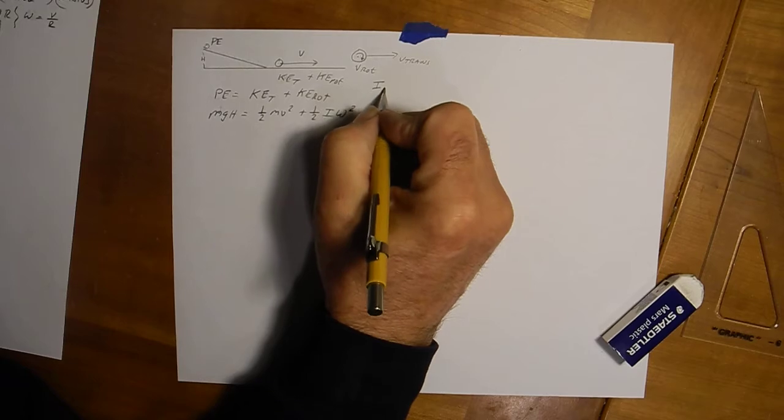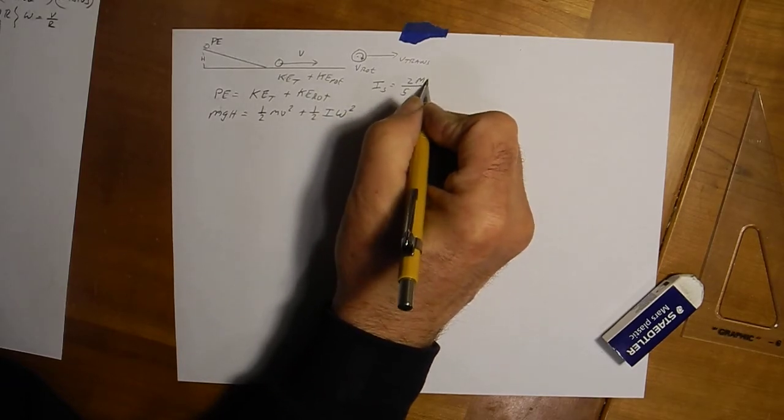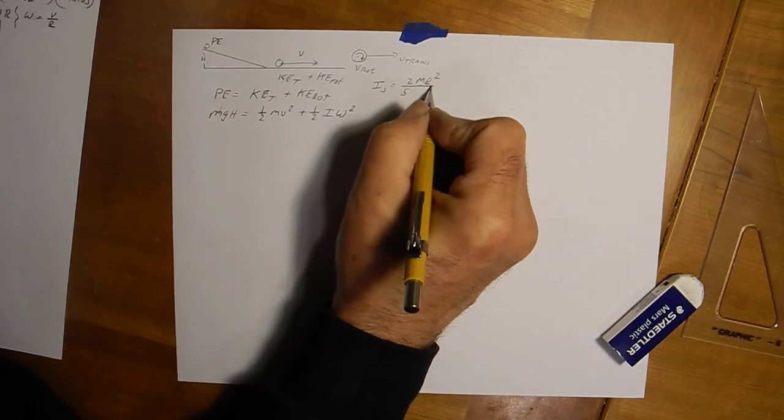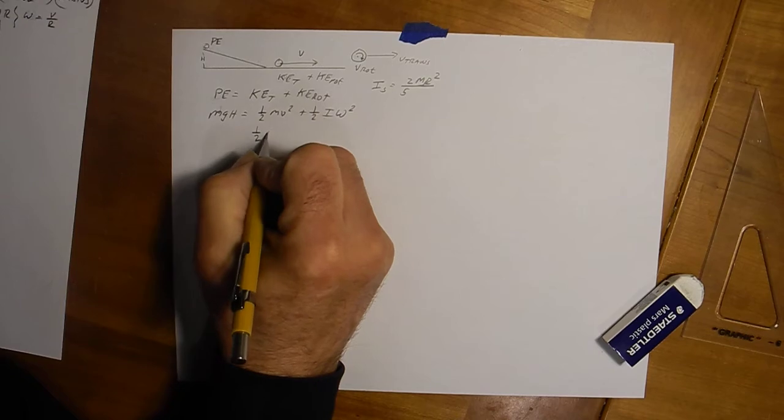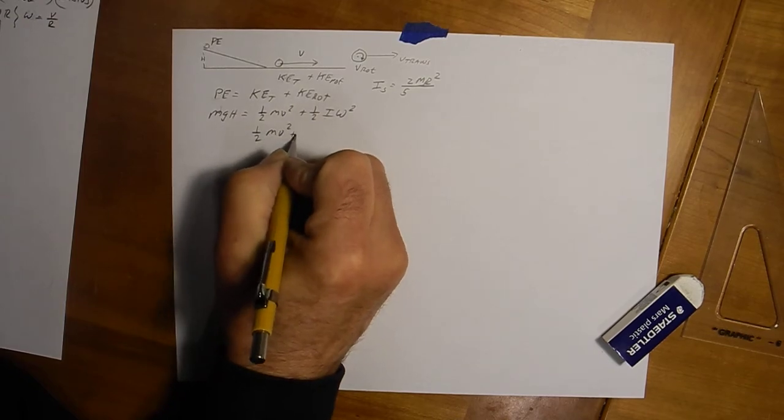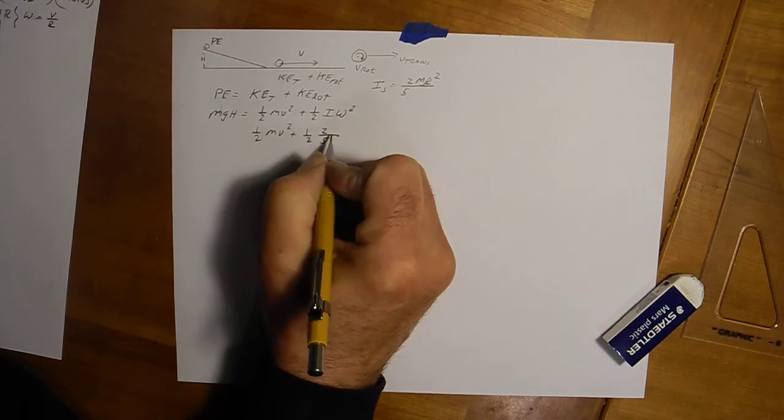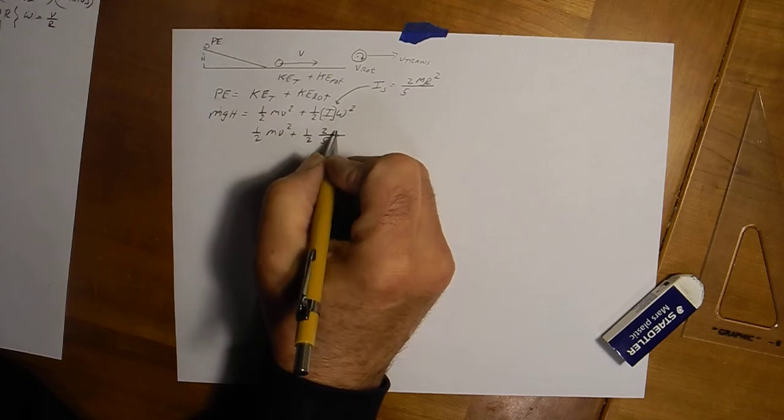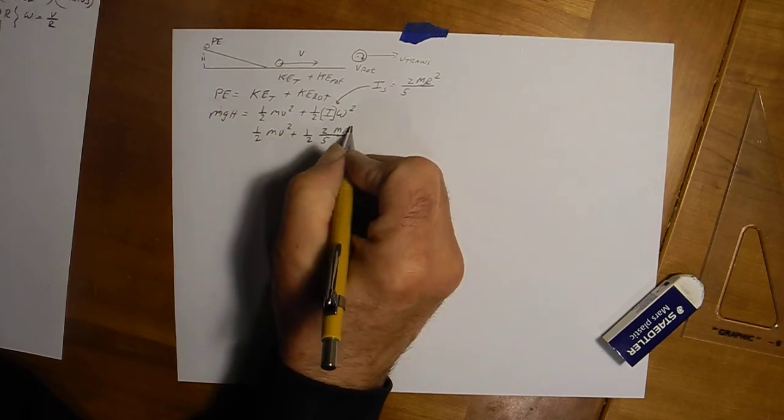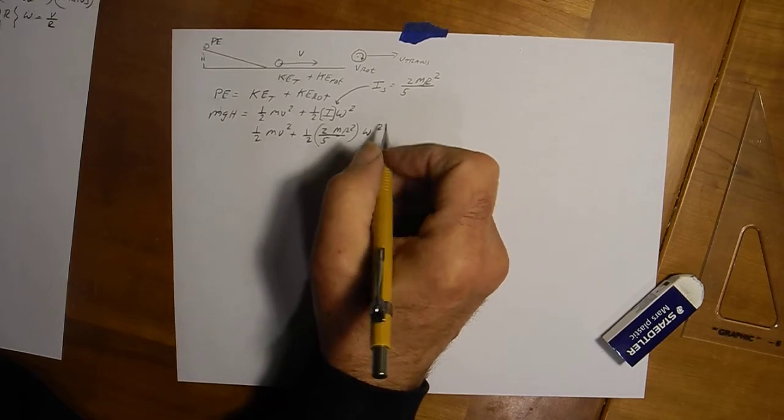So let this be a sphere. So I for a sphere is two fifths mr squared, we have not derived this one yet but we'll do a separate video on that. So you have one half mv squared plus one half two fifths, we're selecting for I right there, two fifths mr squared times omega squared.